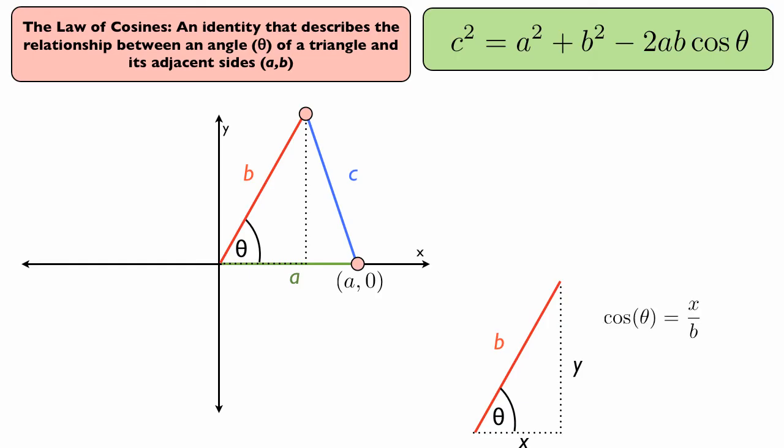By definition, cosine of theta is equal to the adjacent over the opposite side, or x over b. And by multiplying both sides by b, we have x is equal to b cosine theta.